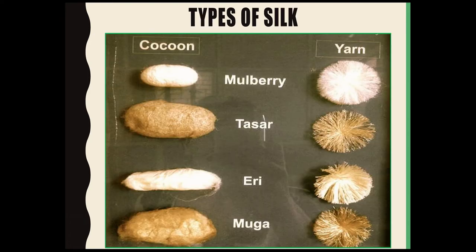If we talk about types of silk, a lot of variety of silk is available in the market because of different species of silk moth which give different varieties of silk. A few examples are mulberry silk, tussar silk, eri silk, mooga silk, etc. Out of all these, the most common and most popular is mulberry silk.